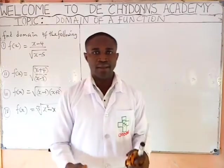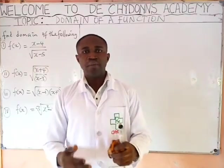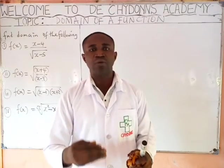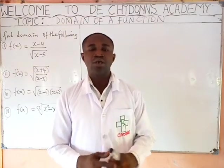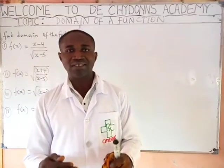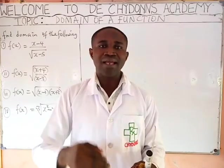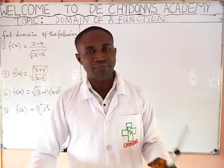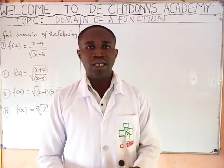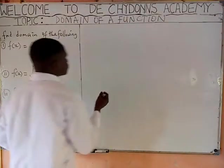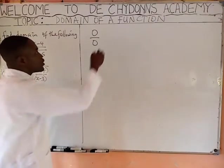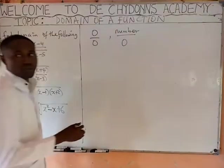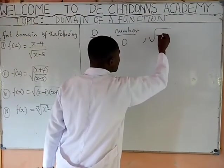What do we mean by domain of a function? Domain of a function can be defined as the values of x that will make the function to be defined. A function is said to be defined if it did not give you 0 over 0, or a number over 0, or square root of a negative number.